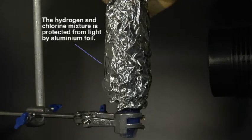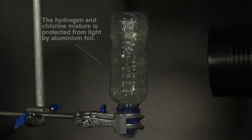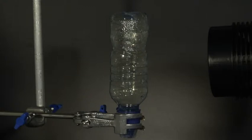This plastic bottle was filled with an equimolar mixture of hydrogen and chlorine by displacement using pure gases from cylinders. The bottle is securely clamped in a fume cupboard and a powerful flash gun is placed near to the bottle.